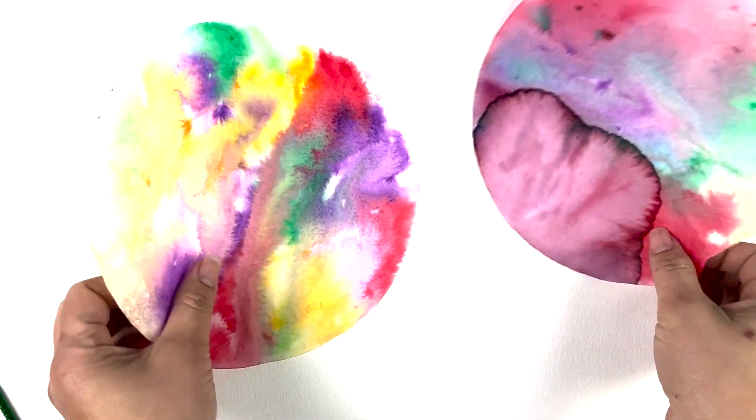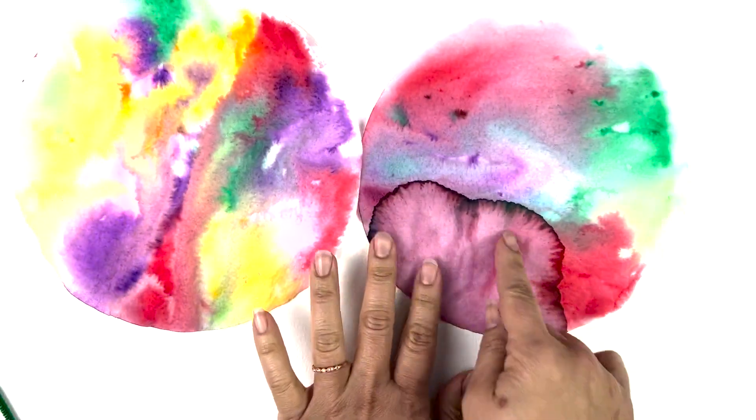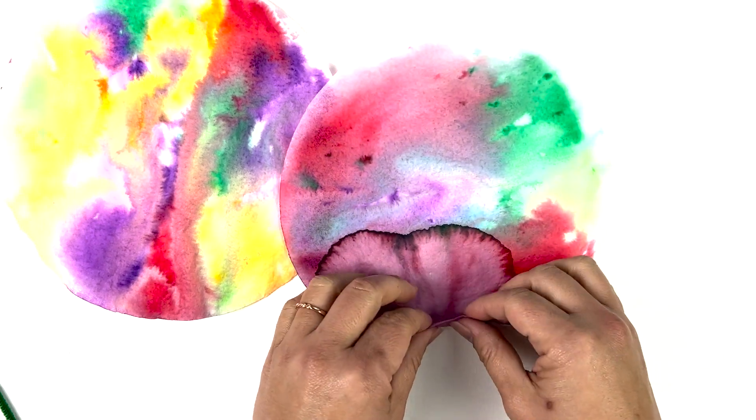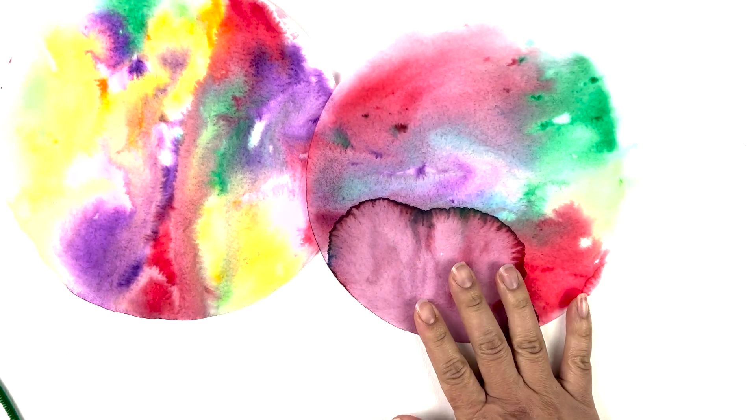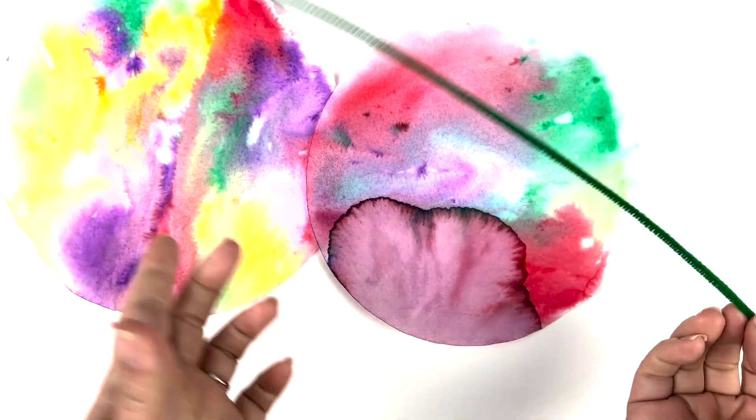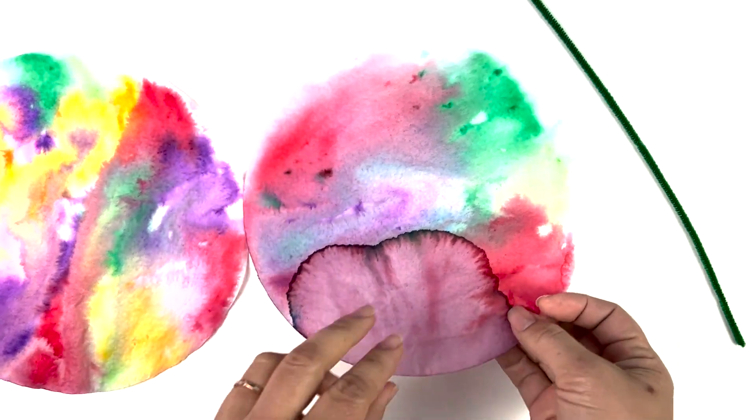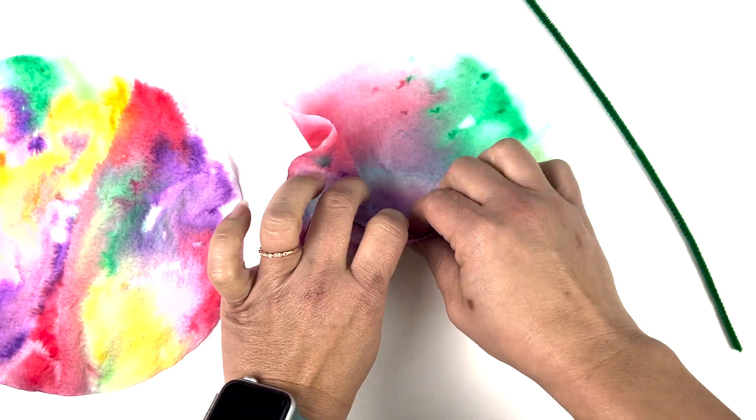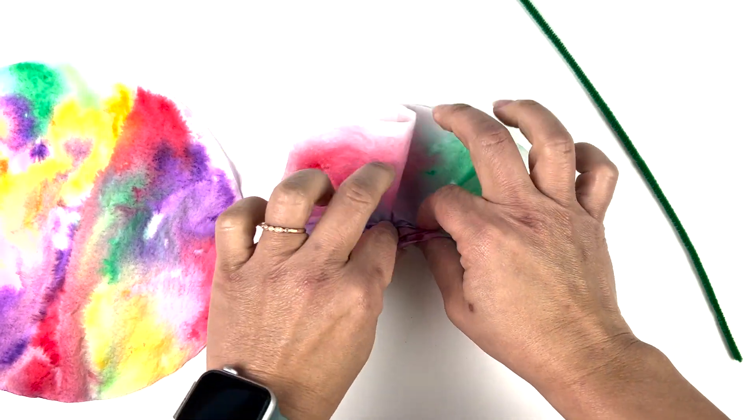Now when your coffee filters are all dry, it looks like this. It's okay if it all mixes together unevenly because it's all part of what you want it to look like at the end. Now you're going to take your pipe cleaner and set that aside, and you're going to start folding it in the center.